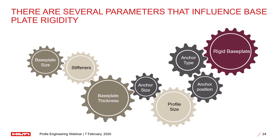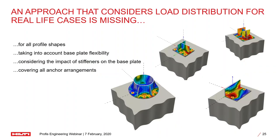Several parameters influence base plate rigidity: base plate size, stiffeners, base plate thickness, anchor size, anchor type, and anchor position can all have significant impact. Rigidity also depends on the profile size and plate thickness. Our market research found that an approach considering load distribution for real-life cases was missing — we could not account for base plate flexibility, the impact of stiffeners, or all anchor arrangements.